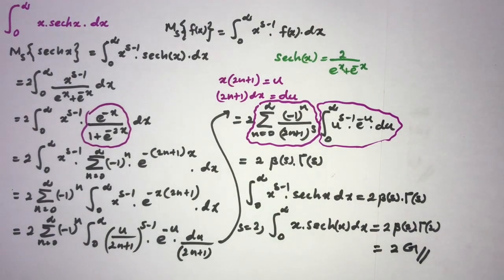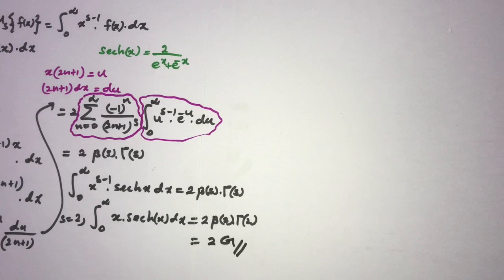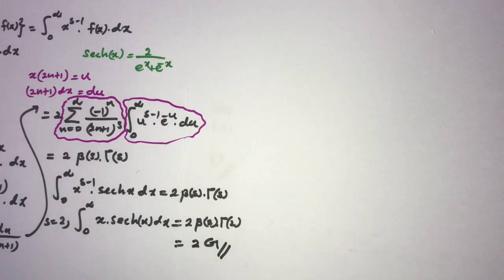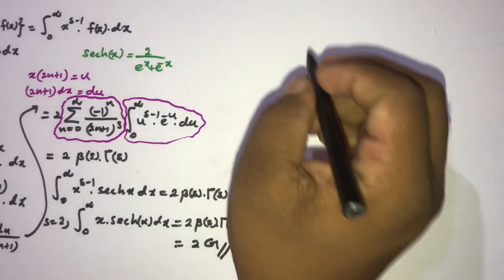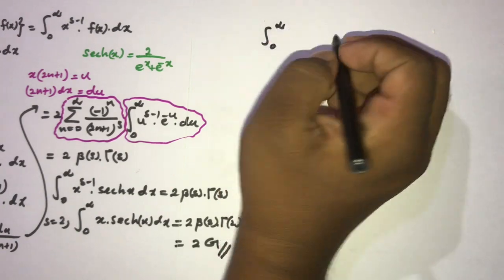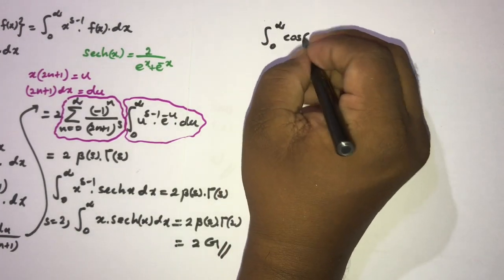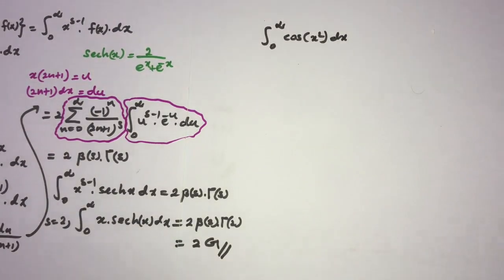Now we are going to evaluate some integrals using the Mellin transform — practice integrals, because some integrals we can evaluate easily this way. For example, the Fresnel-type integral: the integral from 0 to infinity of cos(x²) dx. We are going to evaluate this using the Mellin transform.